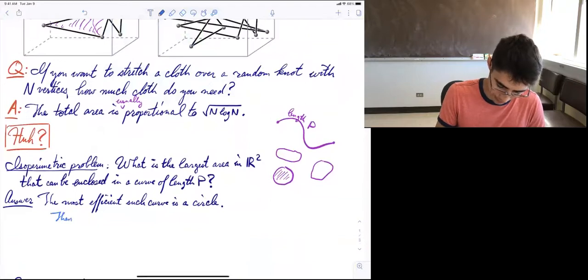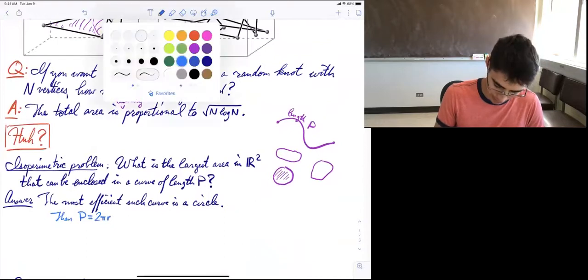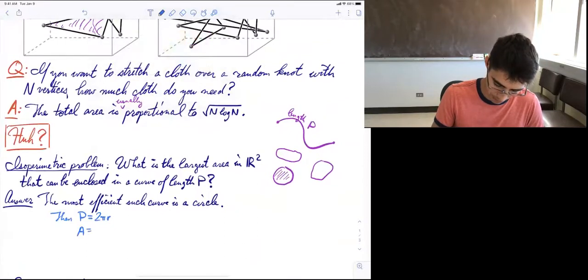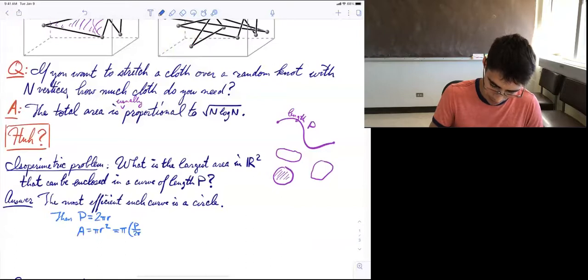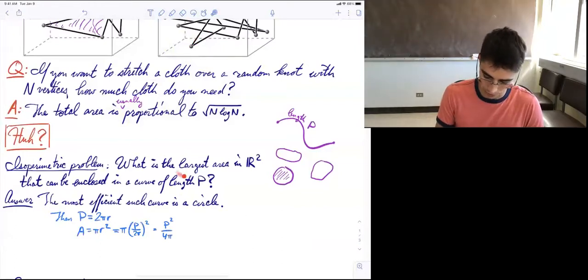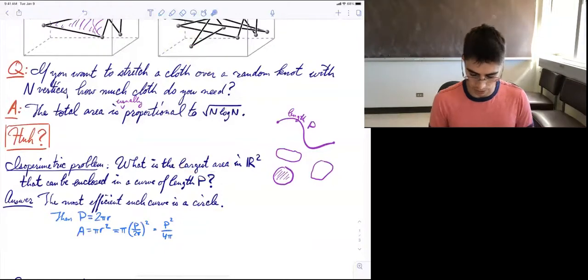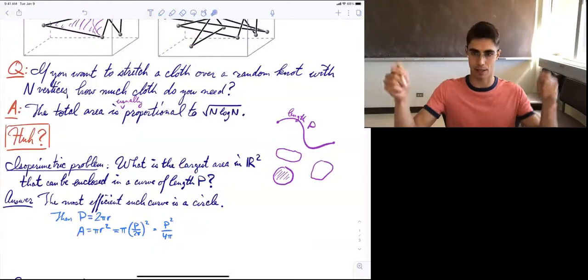It's not that hard to guess that the answer is going to be that the best you can do is a circle. And so therefore, in that case, the perimeter is 2π times the radius and the area is πr². If you substitute this first equation, you get π times p over 2π squared, and that's p² over 4π. So if you're asking about the largest area, then the answer is p² over 4π, where p is the length of your string.